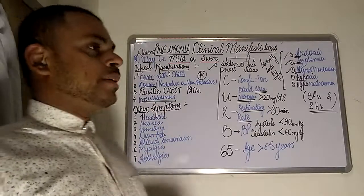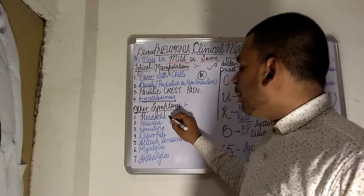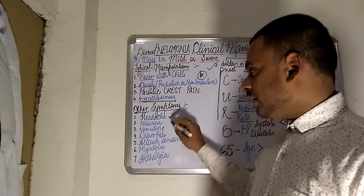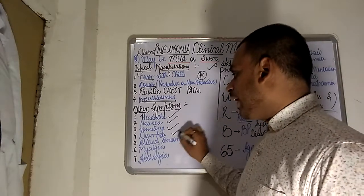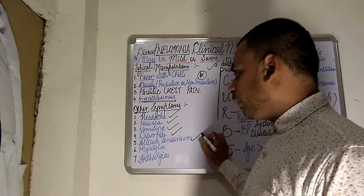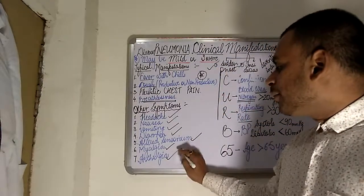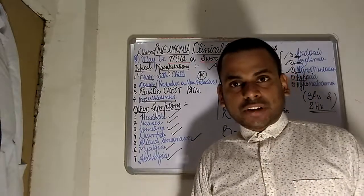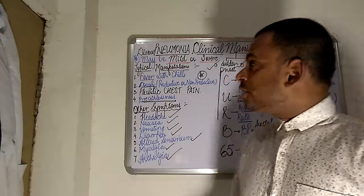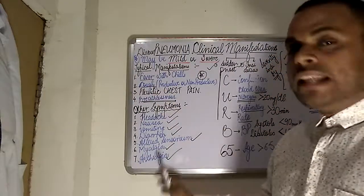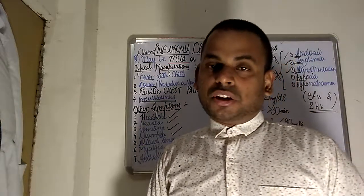The other symptoms include headaches, nausea, vomiting, diarrhea, altered sensorium, myalgia (muscle pain), and arthralgia (joint pain). These 11 features can be assessed when examining a patient of pneumonia.